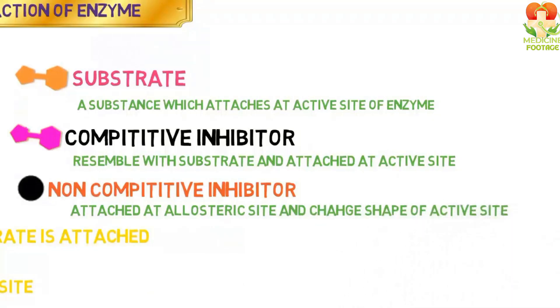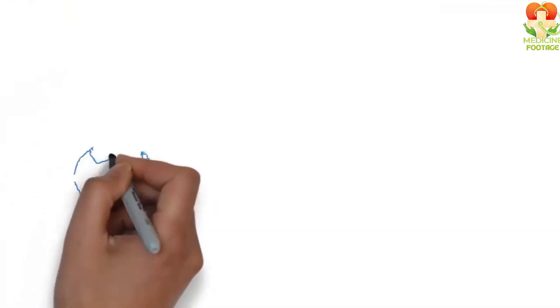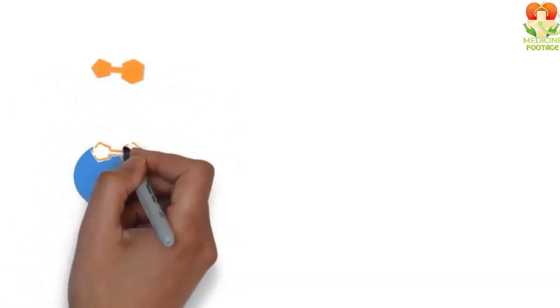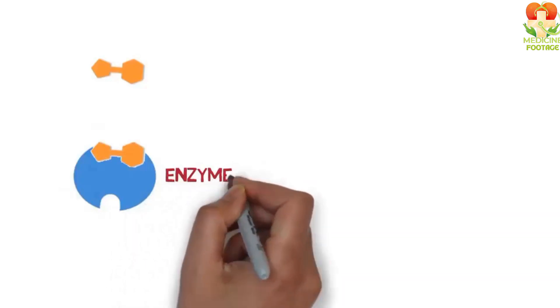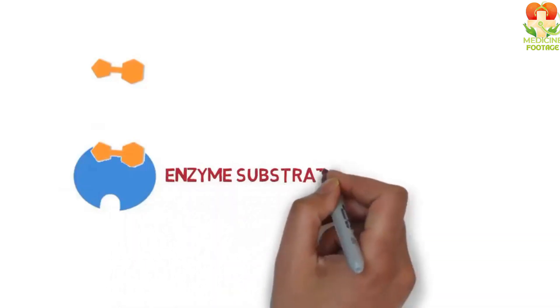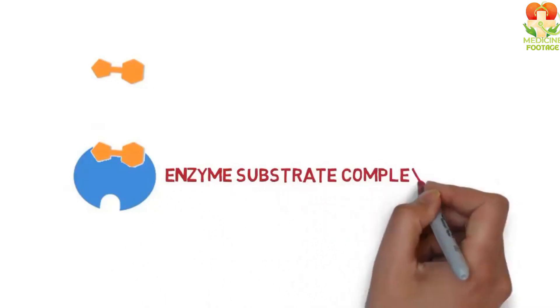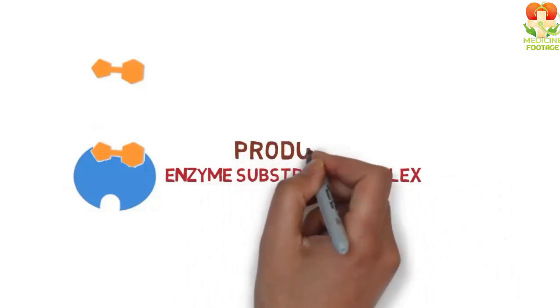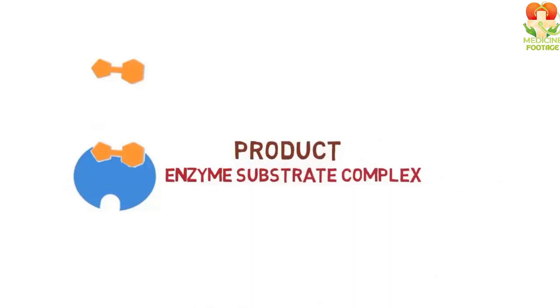Now, how do these mechanisms work? Let's begin. Here you can see an enzyme and this is its substrate. The substrate comes and fits into the enzyme's active site, forming an enzyme-substrate complex. This allows the reaction to occur, resulting in the formation of the enzyme's products.